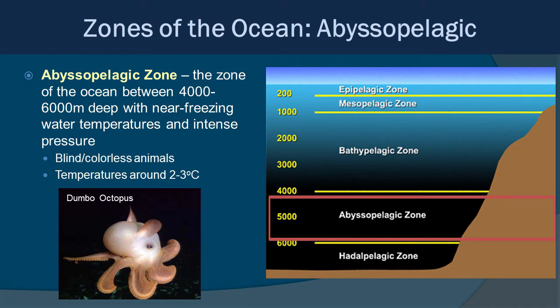We can descend even further into the abyssal pelagic zone, between about 4,000 and 6,000 meters, with near-freezing water temperatures and intense pressure. Organisms that tend to live here are blind and colorless because you don't need those things — temperatures tend to be around two to three degrees Celsius. The Dumbo octopus is an example. A lot of abyssal animals tend to live near the bottom of the abyssal zone, essentially near the sea floor, which connects with the benthic zone.